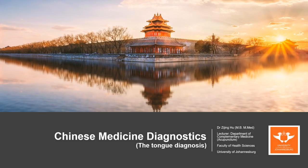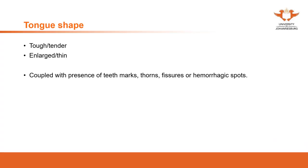Good day everyone. In this video we are going to talk about the tongue shape. The tongue shape mainly refers to the tough tongue, the tender tongue, and the enlarged or firm tongue. In the later slides we're going to introduce what these terms mean. Apart from these two categories, the patient also may present with teeth marks on the tongue, thorns on the tongue, fissures, or hemorrhagic spots on the tongue.